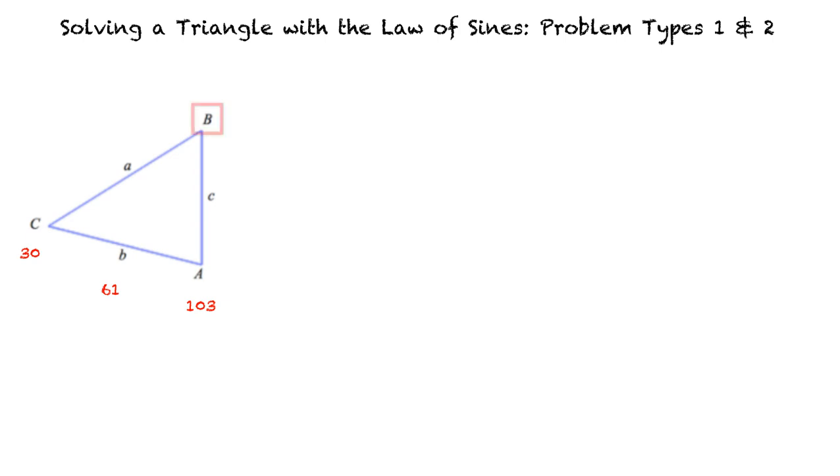The first thing we will do is find angle B using the knowledge that all angles in a triangle sum up to 180 degrees. This helps us find that B equals 47 degrees. Next, we can find the remaining side lengths using the Law of Sines. What is the Law of Sines?